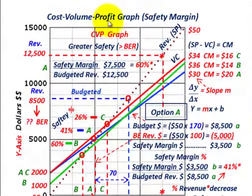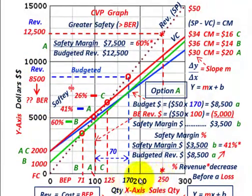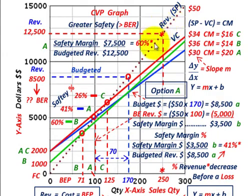What we're going to be going over here is a cost-volume-profit graph where we're going to be calculating the safety margin. On our graph here, along our y-axis that's going to be a dollar amount, and then along our x-axis is going to be our quantities or our sales quantities. The brown dotted line is going to be our revenues line, and then we're going to have three different costing lines, each with a different variable cost and an associated different fixed cost.